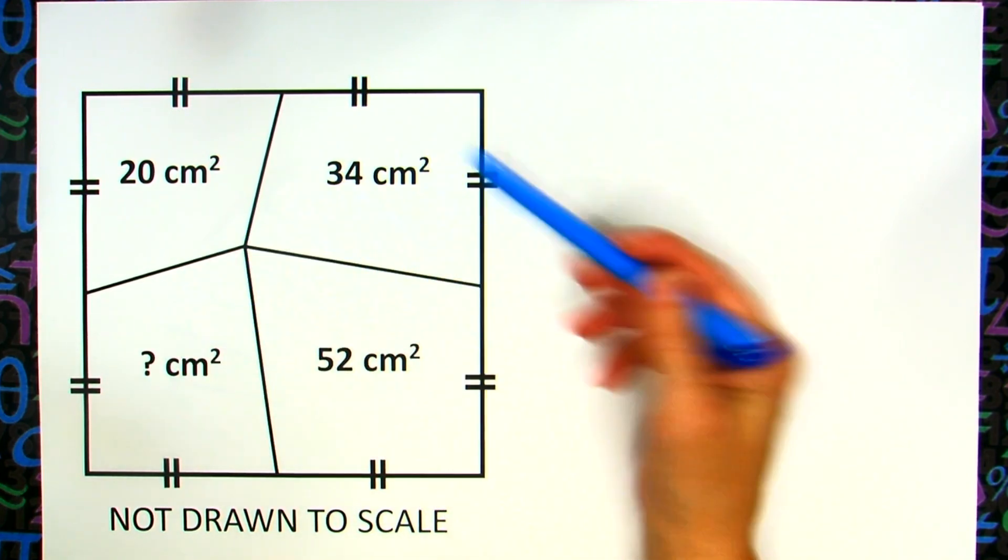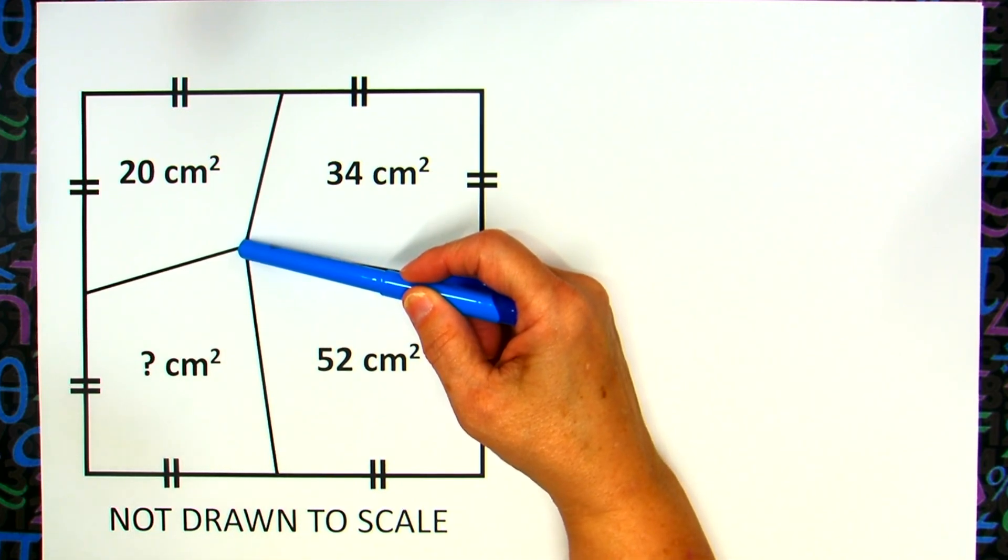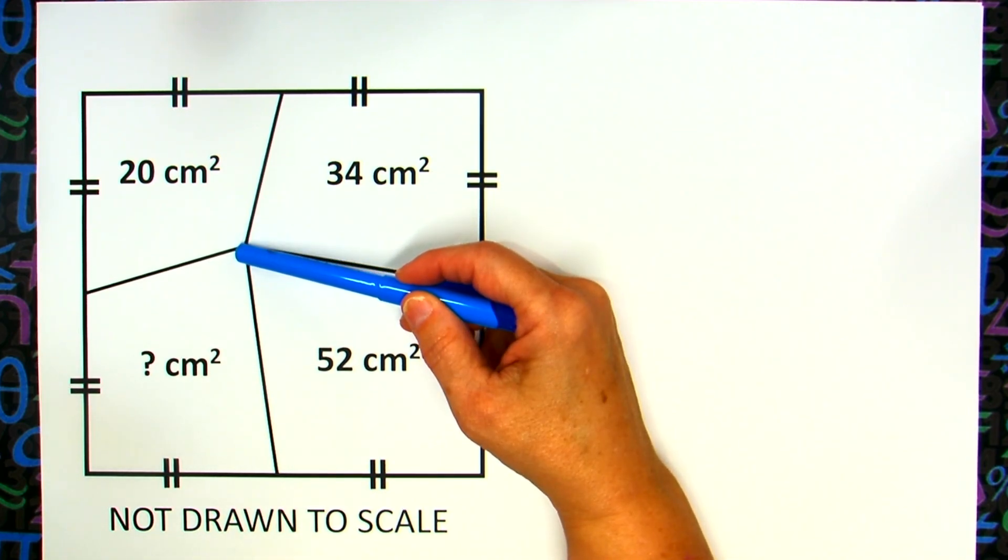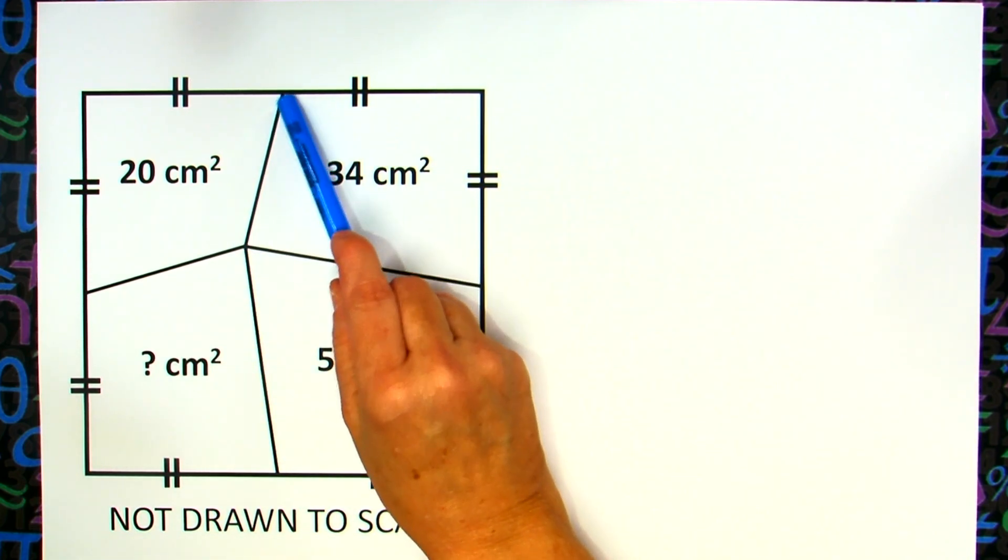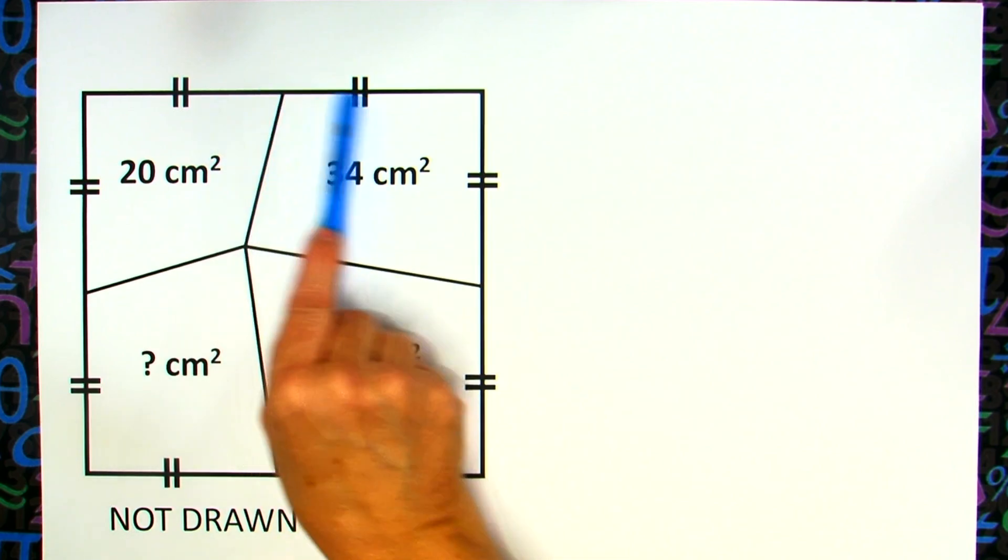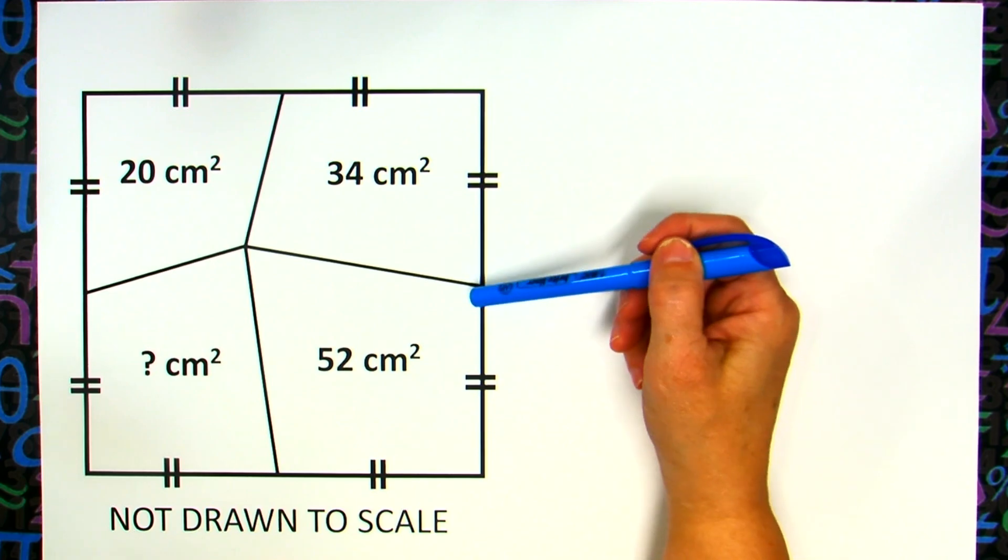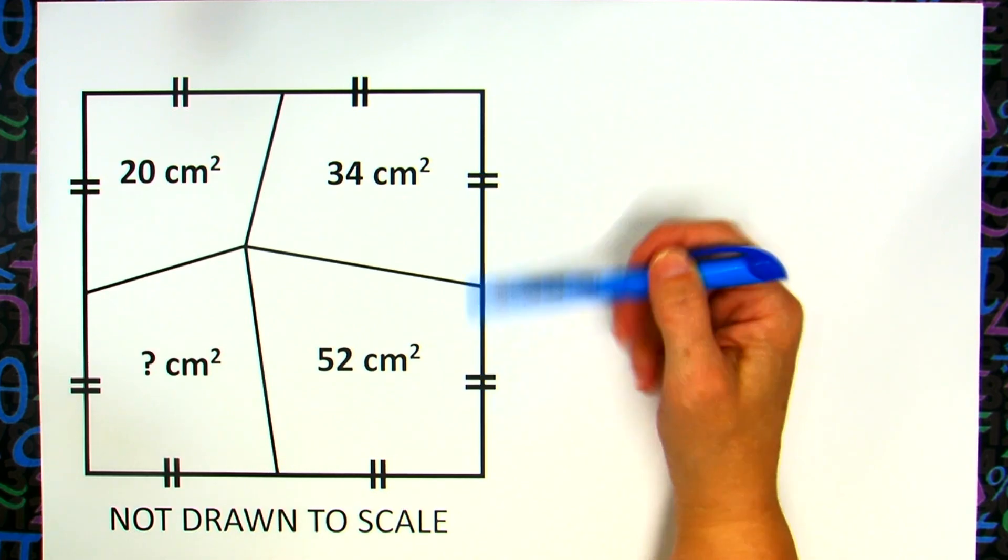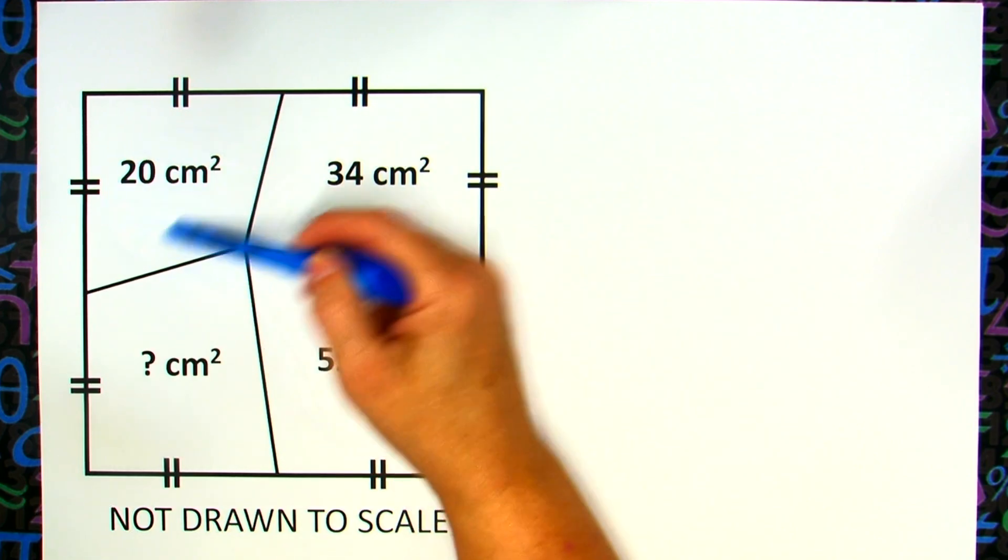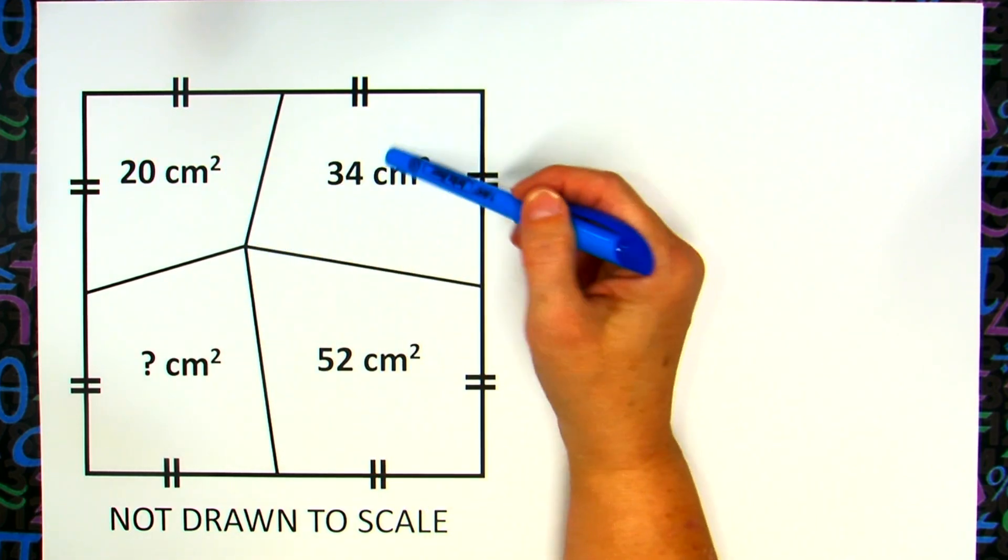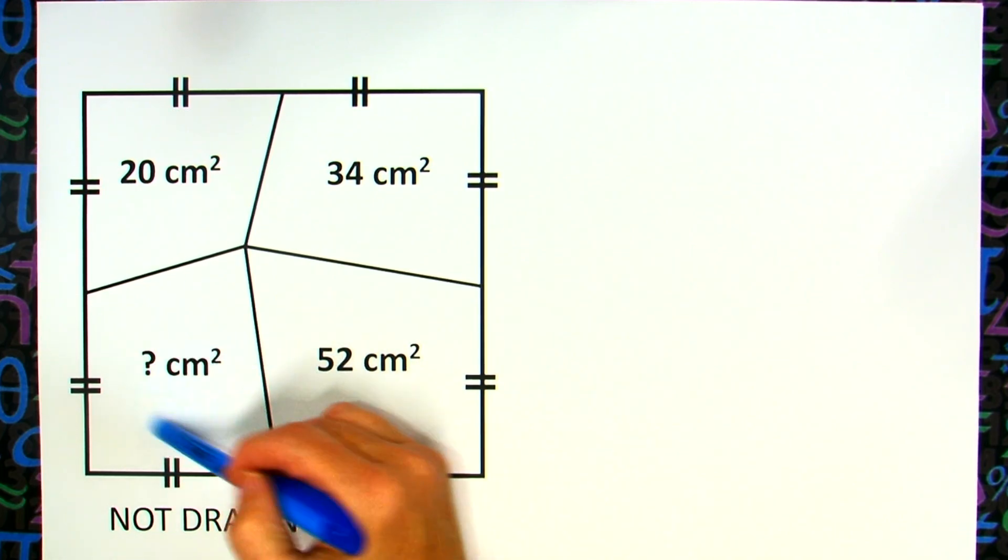This is not drawn to scale. It is a square, and a point has been randomly selected in the middle of the square, and from the center, a line has been drawn to each side in such a way that it bisects the side, which makes these two parts congruent. So from the center to this side, it hits at the midpoint here, making these two sides congruent. Other information they've given us is that the area of this right here is 20 centimeters squared, 34 centimeters squared, 52 centimeters squared, and we've got to find this space over here.